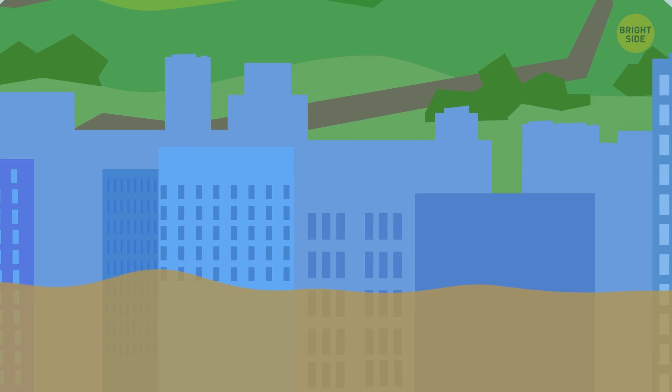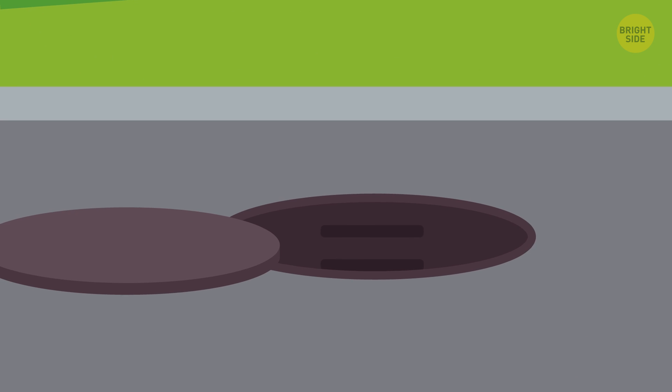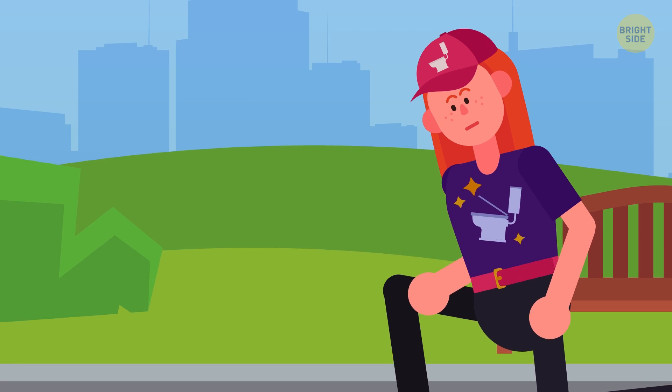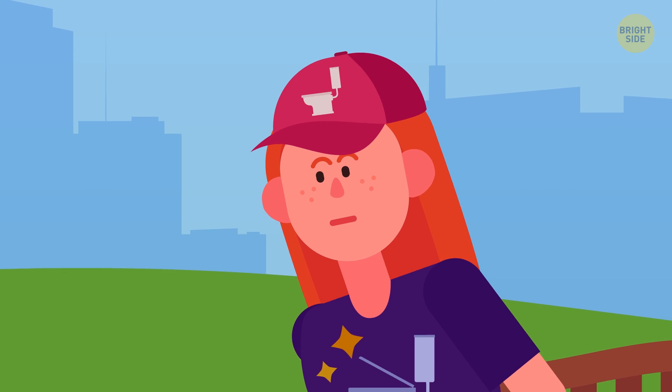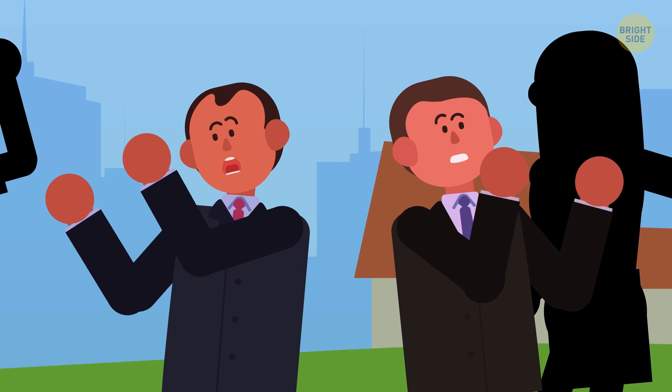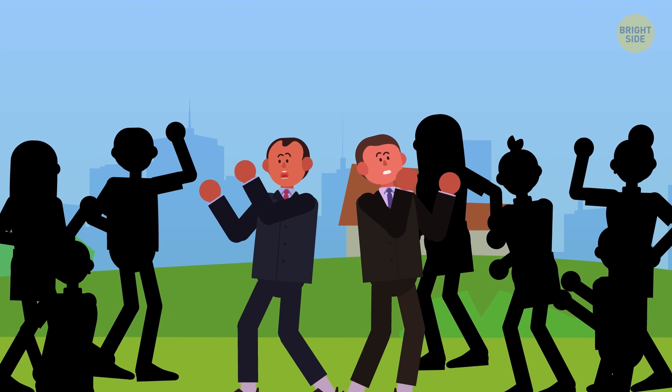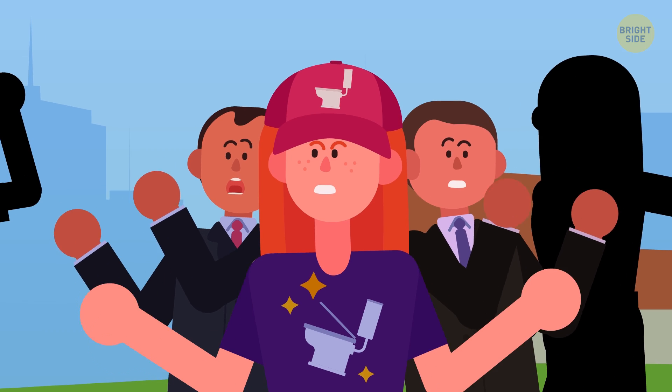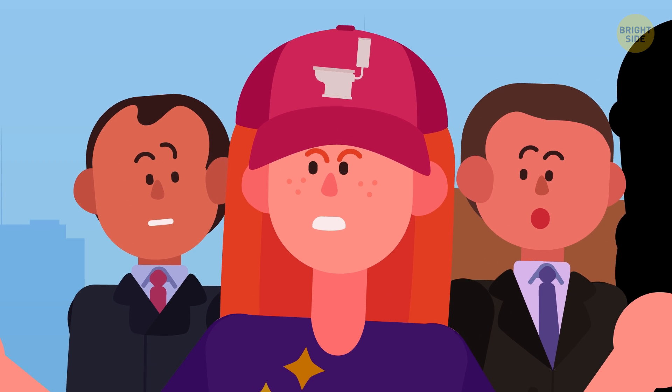The whole town gathers on the highest hill. There are manholes here, too, but the sewage waters don't overflow here because it's too high, thankfully. People are glaring at the government officials, who proposed the idea in the first place. But everyone understands it's their own fault, too.